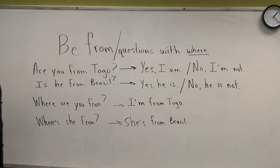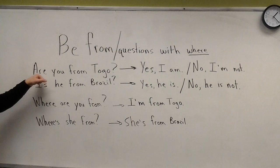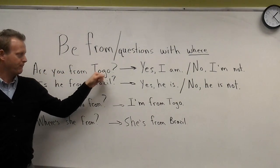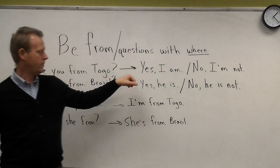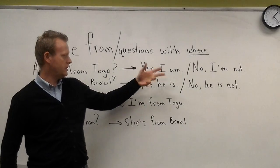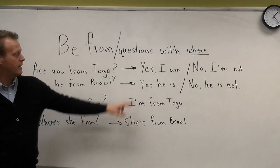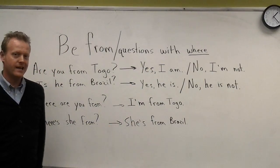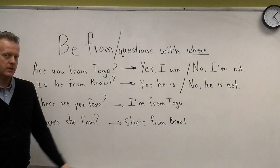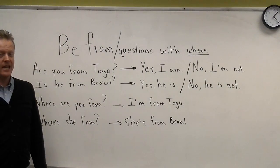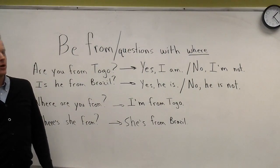Alright, so let's look at the first example. You're going to say, 'Are you from Togo?' The answer — you can answer it in the negative or the positive. Yes, I am. That's the short version. Or you can say, yes, I am from Togo.